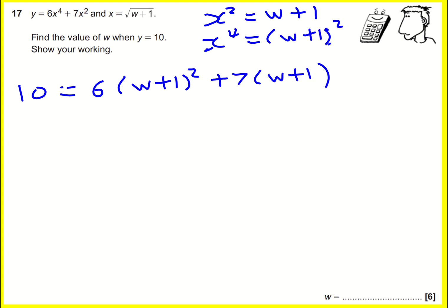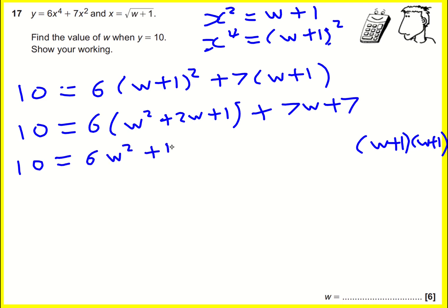Okay, hmm, still doesn't look that nice, does it? But now we're just going to have to expand it out. So 10 is going to equal 6, and then this is a double bracket. It's going to give me w squared plus 2w plus 1, because I'm basically, I'm not going to do this in detail, but I've expanded w plus 1, w plus 1. And then over here I've still got my 7w plus 1, I might as well expand that. Another line, 10 equals 6w squared plus 12w plus 6 plus 7w plus 7.